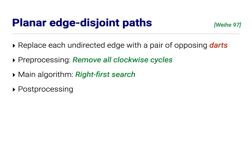So here again is the algorithm. Make the graph directed. Remove all clockwise cycles using depth contours. Run right-first search. Keep your hand on the right wall when you're in your T, teleport back to S. Never use the same dart more than once. And then a bit of post-processing.